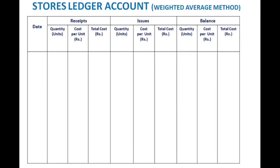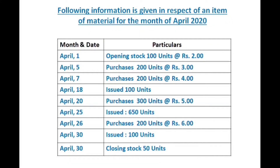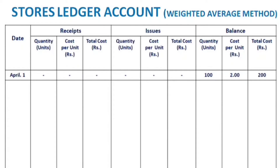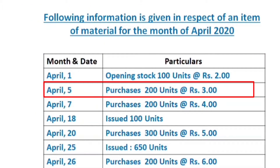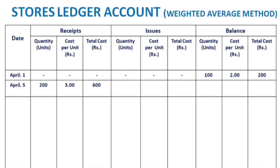For April 1st, the opening stock is 100 units each 2 rupees, so total cost is 200 rupees and this goes in the balance column. For April 5th, purchases of 200 units each 3 rupees go in the receipts column, with a total of 600 rupees.